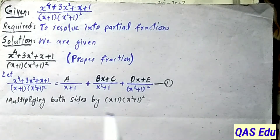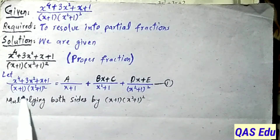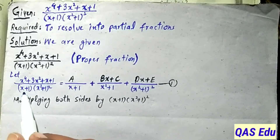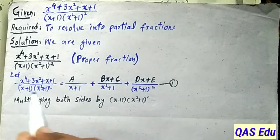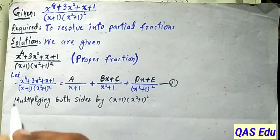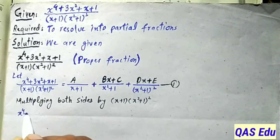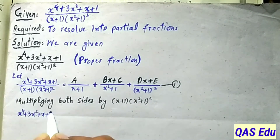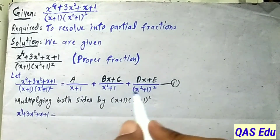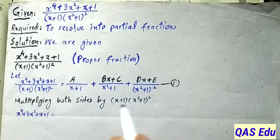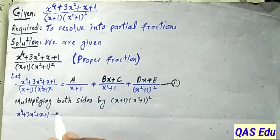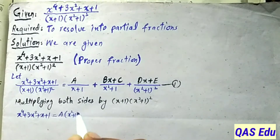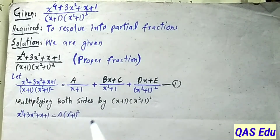This is equation number 1. We need to find A, B, C, D, E. Following the standard procedure: multiply both sides by the denominator of the left hand side - this cancels on both sides. We get: x⁴ + 3x² + x + 1 = A(x² + 1)² + (Bx + C)(x + 1)(x² + 1) + (Dx + E)(x + 1).